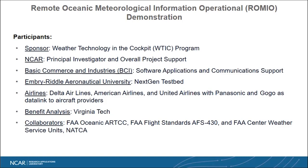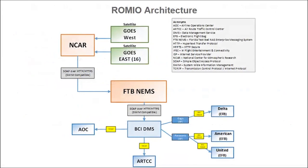Collaborators included the RTCs, the OCCs, flight standards, and the center weather service units, as well as NETCA. Here's a quick diagram showing the data transfer architecture involved. Satellite data comes in, goes across SOAP/HTTPS to the testbed, then BCI handles the data management system to the AOCs and ARCs, and on to the data providers — GOGO and Panasonic for the airlines. Himawari would be on here also; this diagram was made before we added Himawari.